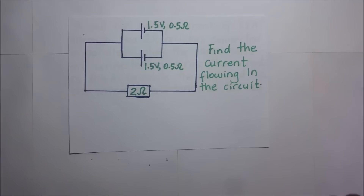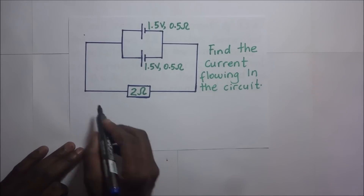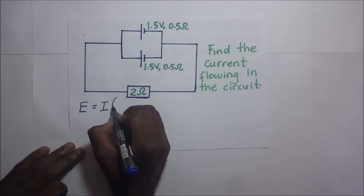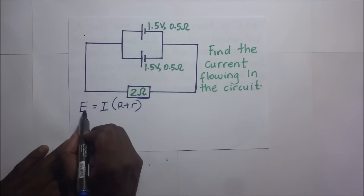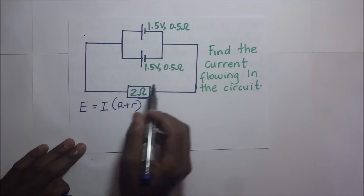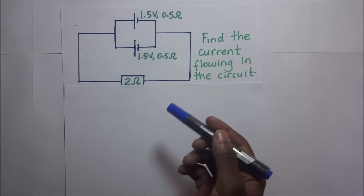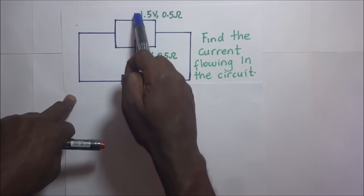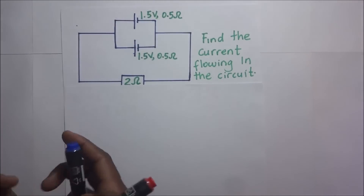Going on to our next question, they are still requiring us to find the current flowing in the circuit. Now if you look at this circuit, it has two cells and these cells are in parallel. So what is first of all the effective EMF?